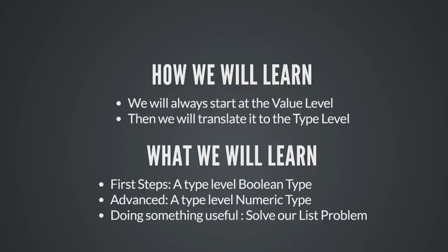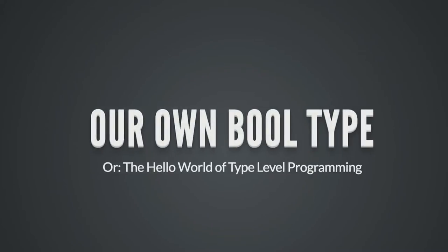What we will learn: first, we look at the type-level Boolean type — the hello world of type-level programming. Then we go more advanced and look at numbers at the type level, where we need recursion, which is also possible at the type level. Finally, we'll do something useful — enhance our list example so that only adding lists of the same size will cause your program to compile. Let's start.